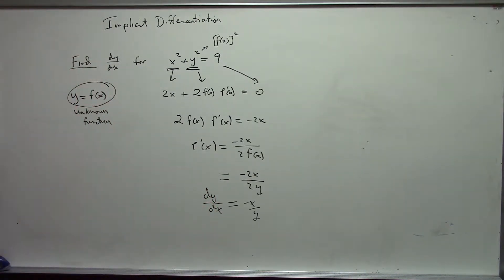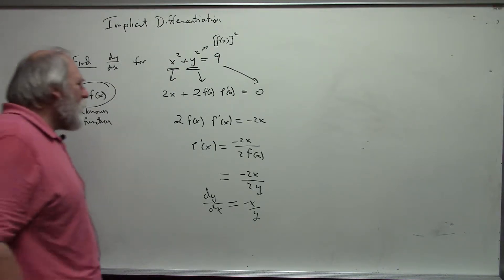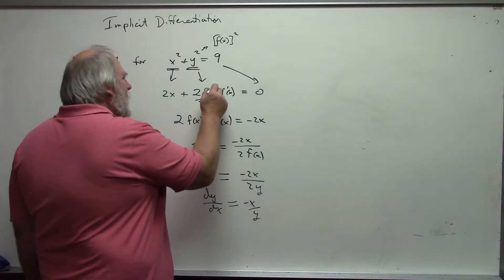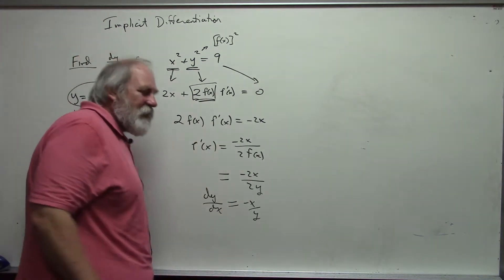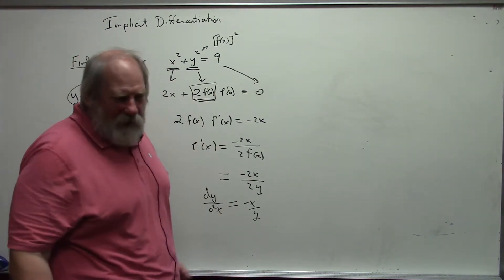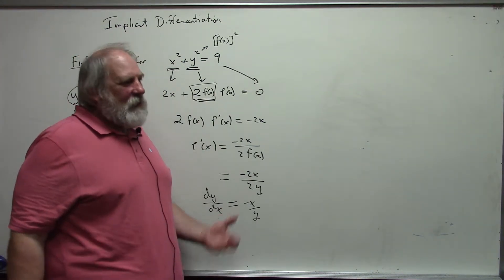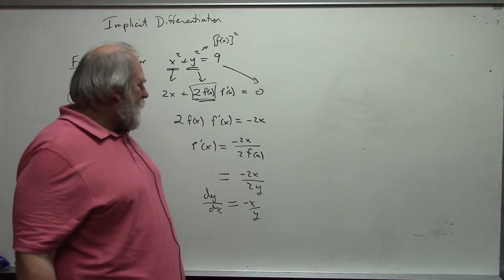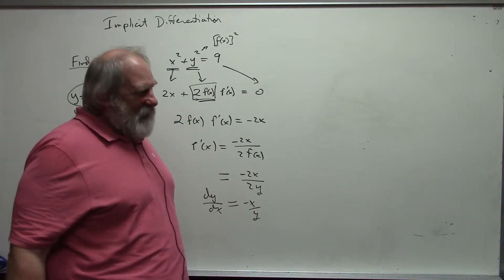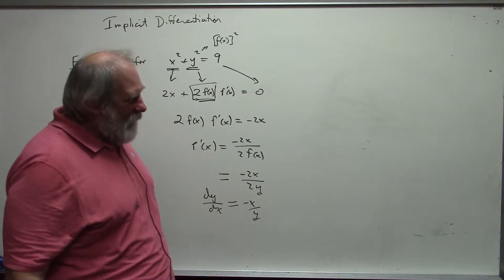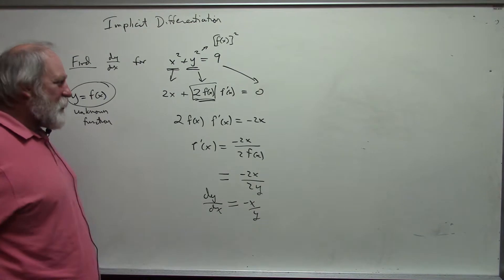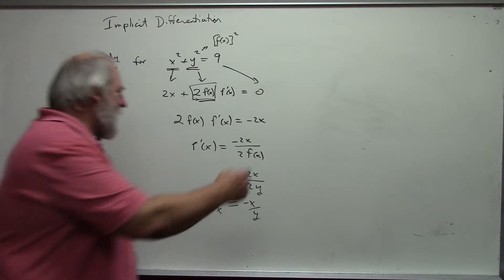Since y equals f(x), this becomes −2x over 2y, or just −x/y. This is dy/dx. Notice this is not a function of x alone — the original wasn't either, and neither is the derivative. Generally we skip the intermediate f(x) step and just understand that differentiating one variable with respect to another requires treating it as an unknown function, which involves the chain rule.